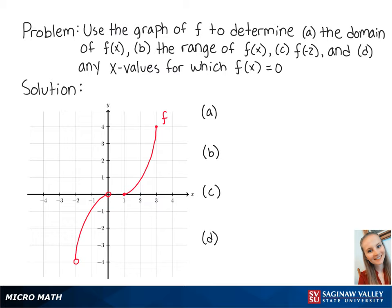For letter a, the domain of f of x is the set of all x values within the function. Looking at the graph, we can see that the smallest value of x is negative 2 and the highest value of x is 3. However, the point where x is equal to negative 2 does not exist, so we cannot include negative 2. The values of x between 0 and 1 also do not exist.